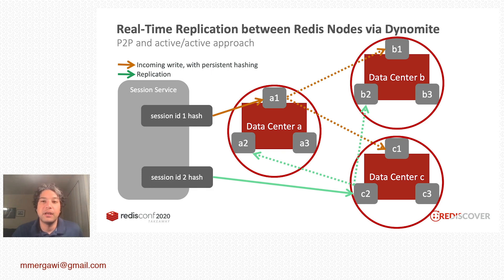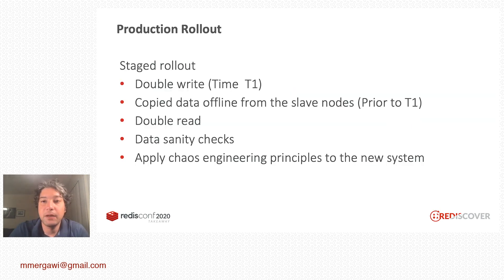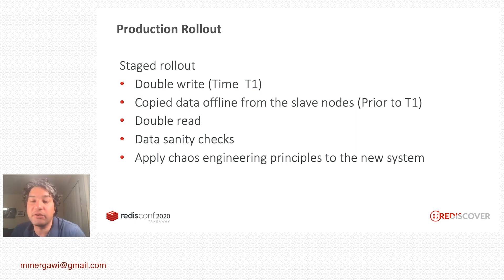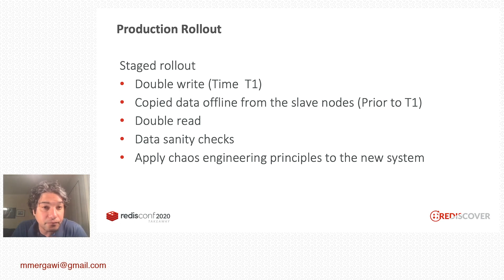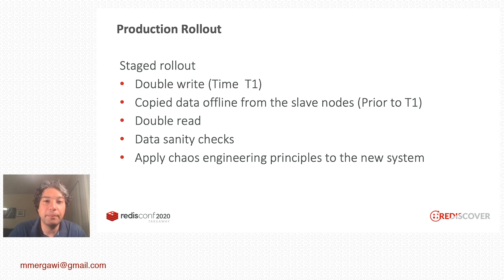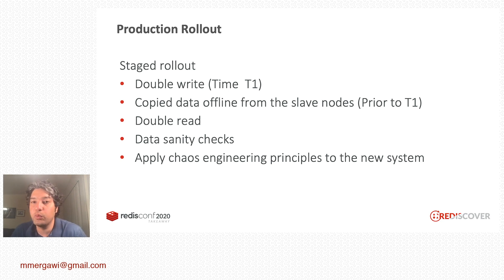One of the most challenging things was how to roll this system to production, especially given the criticality of the data — it's the customer session, so there's no room for failure. What we did was start double-writing to both the old and new systems simultaneously. We copied all the data offline from the slave nodes in the previous architecture. Then we started double-reading — the legacy architecture remained the real source of truth, but we were making a percentage of calls to the new system.